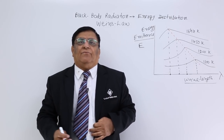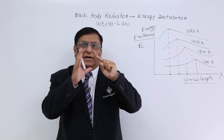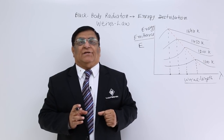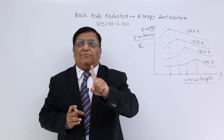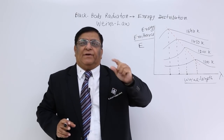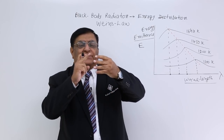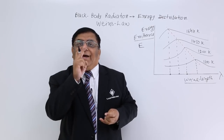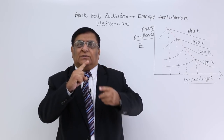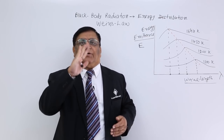We find that the body is radiating out radiation of many types of wavelengths — a combination of lambdas, not only one wavelength but many wavelengths. There are so many waves of different wavelengths, and the total energy is distributed in all these wavelengths. Some wavelengths have got more portion of the energy, others have less portion of the energy.